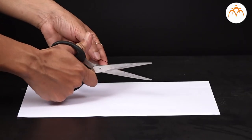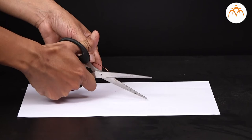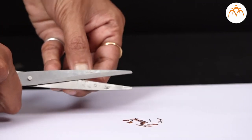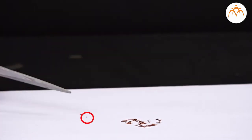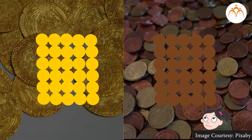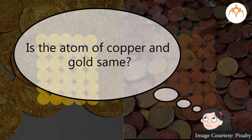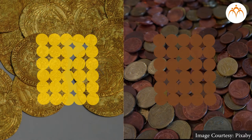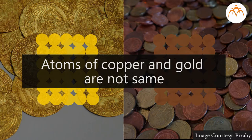Take a copper wire and go on cutting it into smaller and smaller pieces. The smallest part you get in the end, which you cannot further divide, is called the atom. Now imagine a gold wire and follow the same procedure. What you get in the end is the gold atom. Are the atoms of copper and gold the same? Would you exchange them for the same price? No — the atoms of copper and gold are not the same.